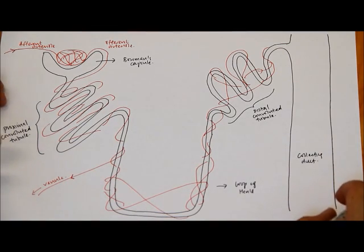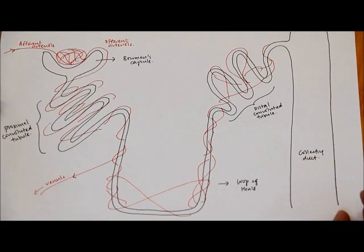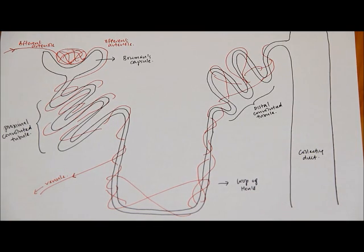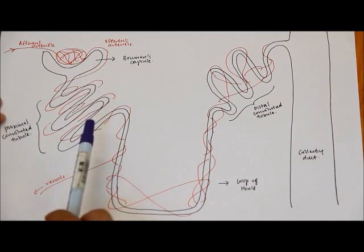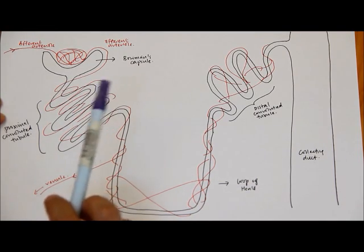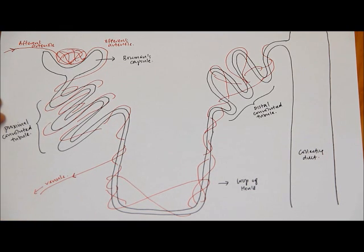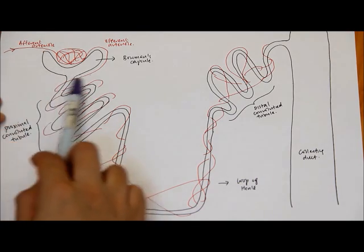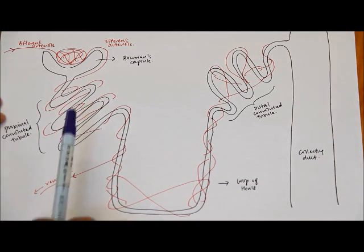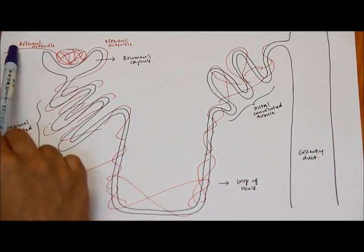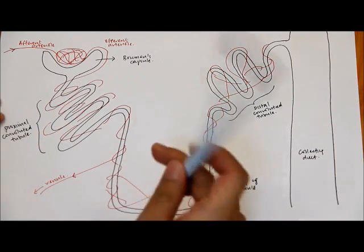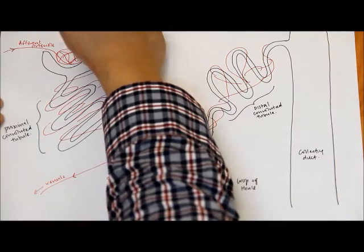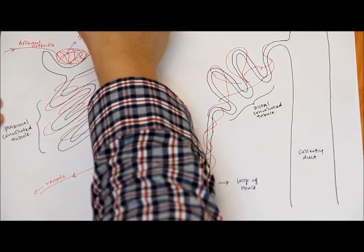We shall now look at the two processes that form urine. The first process is called ultrafiltration, which takes place at the Bowman's capsule. Blood enters the kidneys via the renal artery, which branches into various arterioles. One arteriole enters the Bowman's capsule — this is called the afferent arteriole. Inside, it splits into a network of capillaries called the glomerulus.